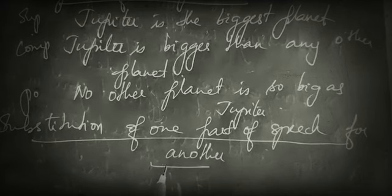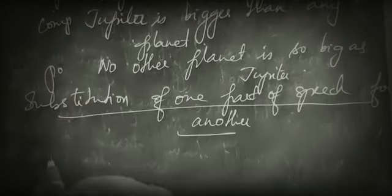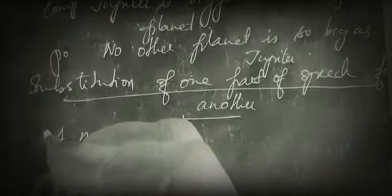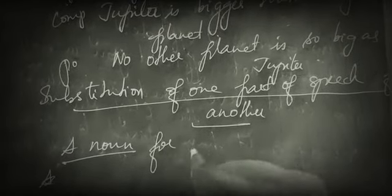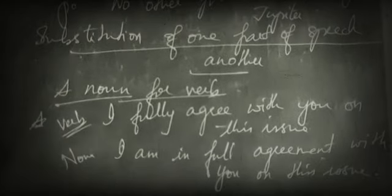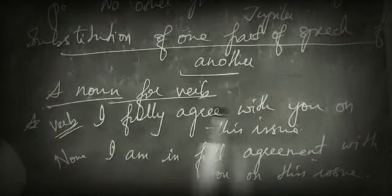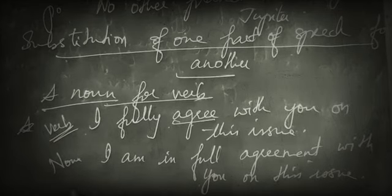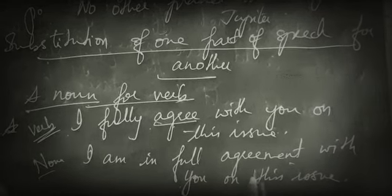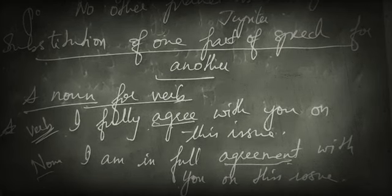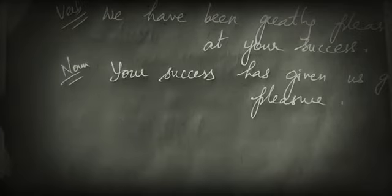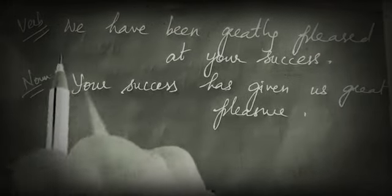Now let us look at substitution of one part of speech for another. For example, substituting a noun for a verb: 'I fully agree with you on this issue' — where 'agree' is the verb — changes to 'I am in full agreement with you on this issue,' where 'agreement' is a noun.